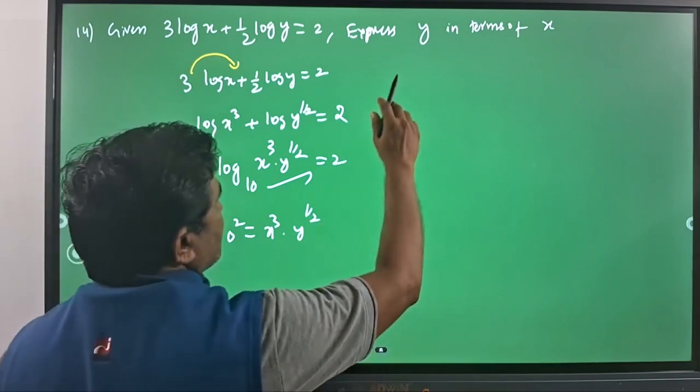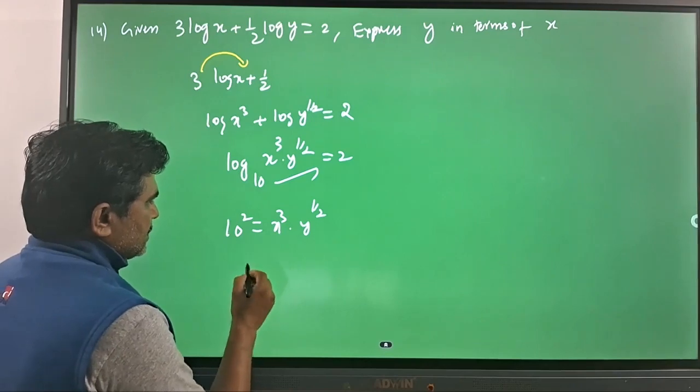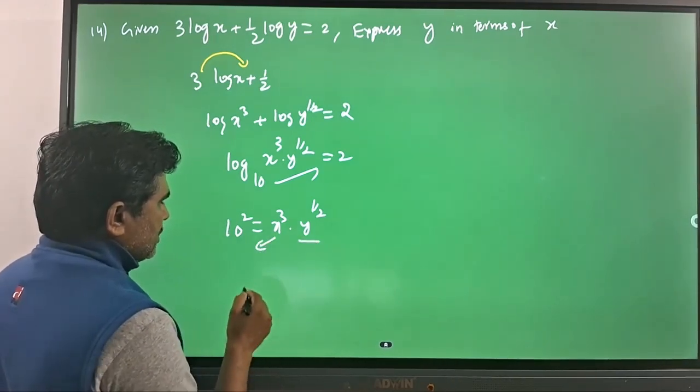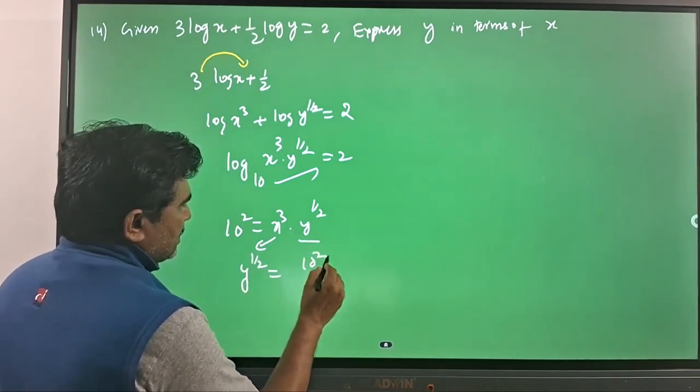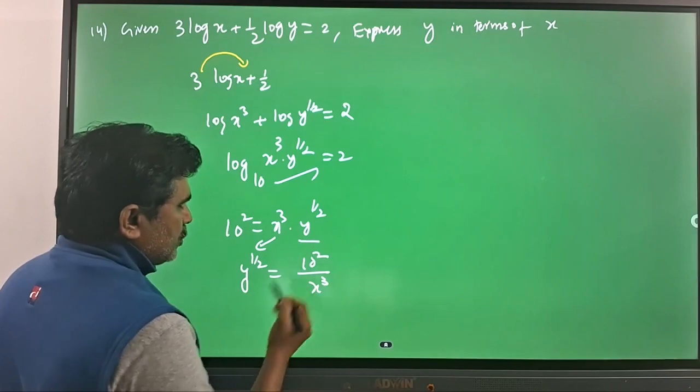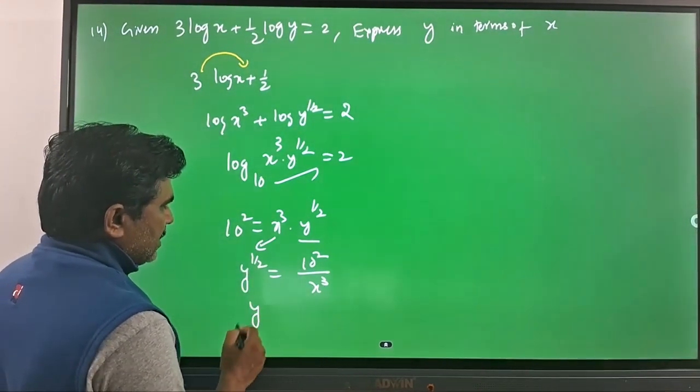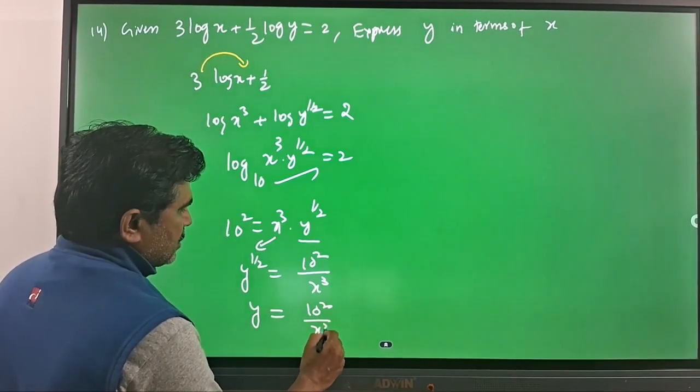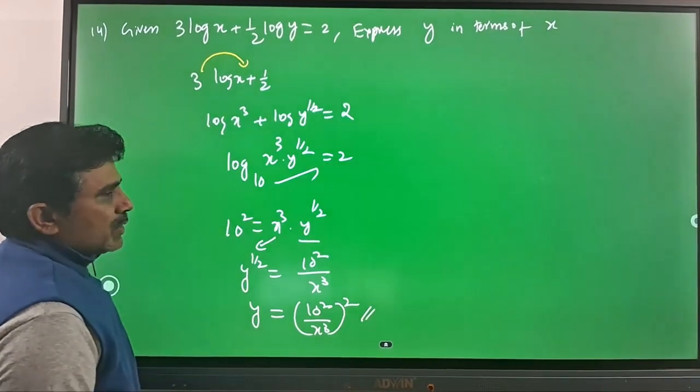We need to find y in terms of x. I am keeping this y here and bringing this x³ to the other side. So you will have y^(1/2) equals 10² divided by x³, and if you square both sides, you will have y equals (10² / x³)². That is the solution.